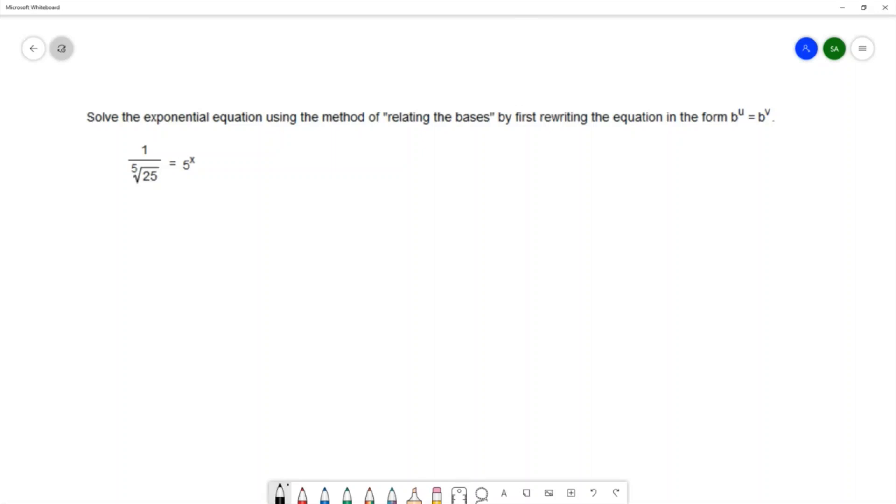So I can write 25 as 5 squared, and I need to remember that radicals can be written as fractional powers. So because this is the 5th root, I can write this as 1 over 5 squared to the 1/5th power.